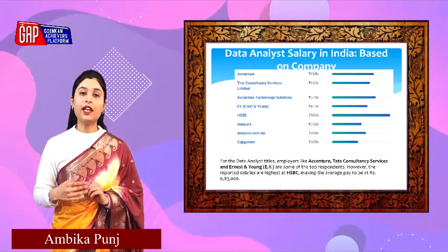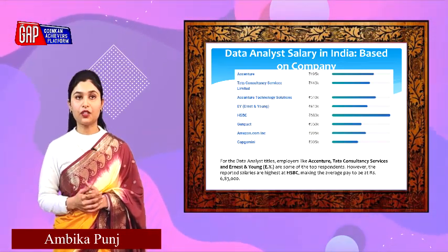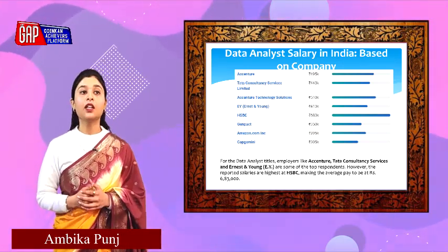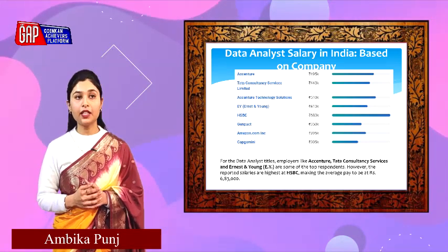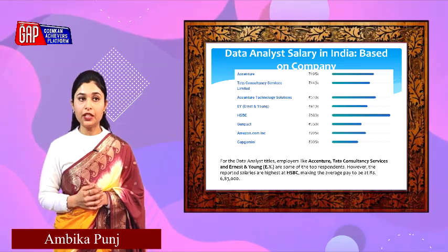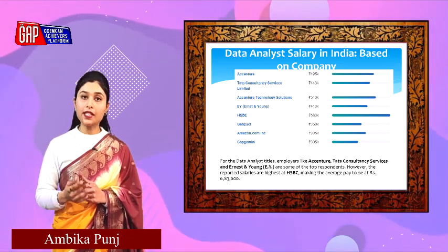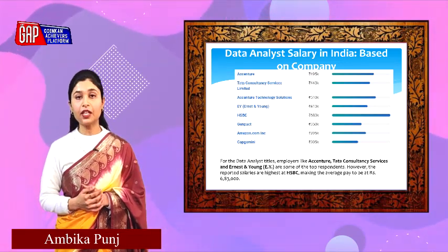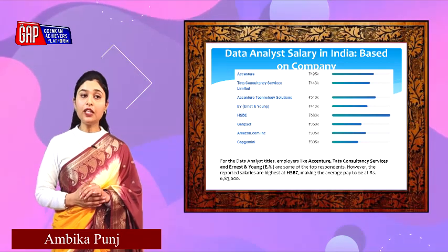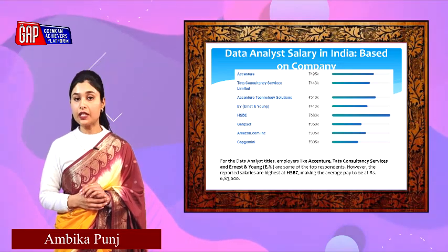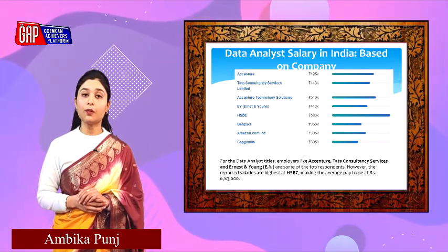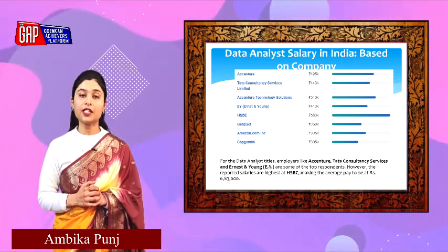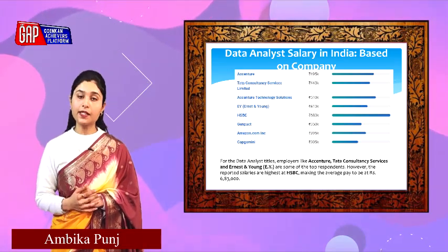Let us talk about data analyst salary in Indian companies. Starting with Accenture: 4,95,000. Tata Consultancy Services: 4,43,000. Accenture Technology Solutions: 4,10,000. Ernst & Young: 4,13,000. HSBC: 6,83,000. Genpact: 3,50,000. Amazon: 3,95,000. And Capgemini: 3,05,000. Employees at Accenture, TCS, and EY are among the top respondents, however the reportedly highest average pay is at HSBC at 6,83,000.